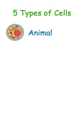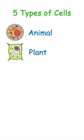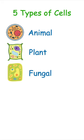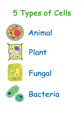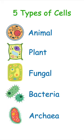There are five types of cells: animal cells, plant cells, fungal cells, bacteria, and archaea.